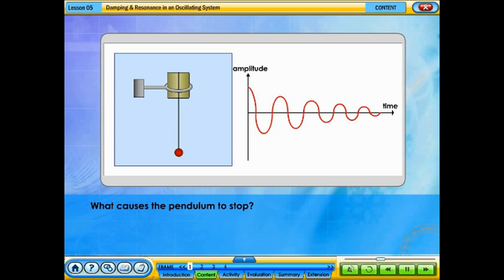What causes the pendulum to stop? Air friction causes the amplitude of the pendulum to decrease.